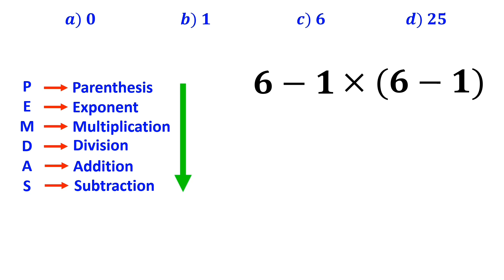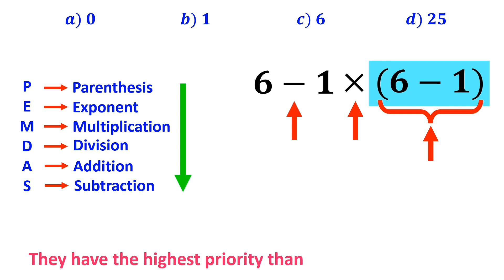Alright, as you can see in the image, in this expression we have a subtraction sign, then a multiplication sign, and finally parenthesis. We must start with the parenthesis first, because they have the highest priority than the other operations.